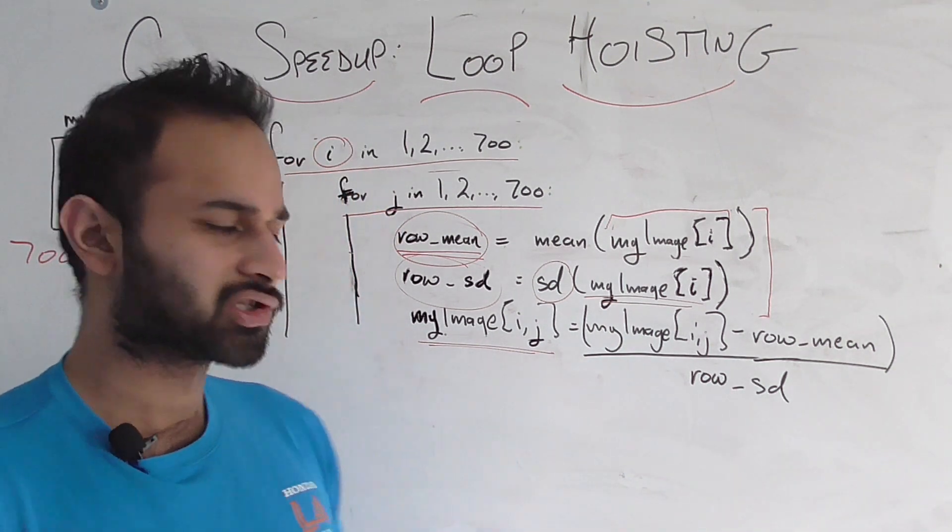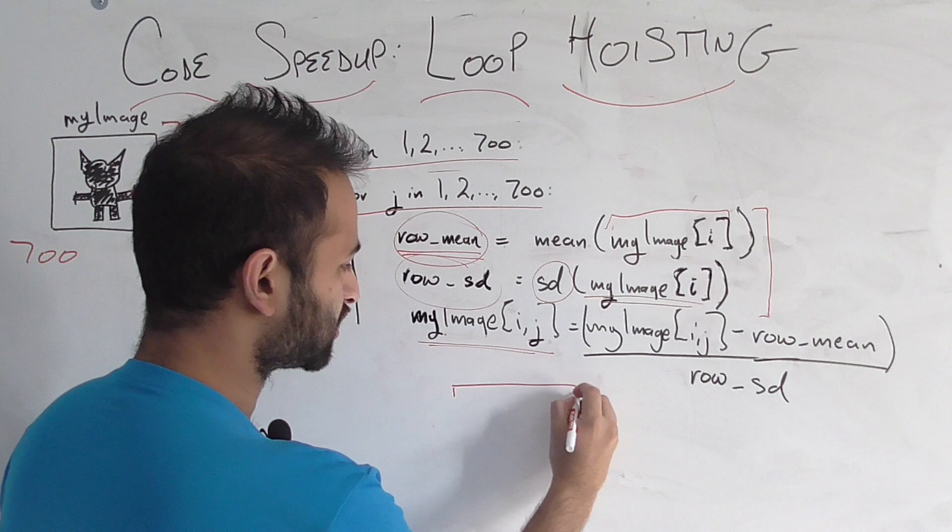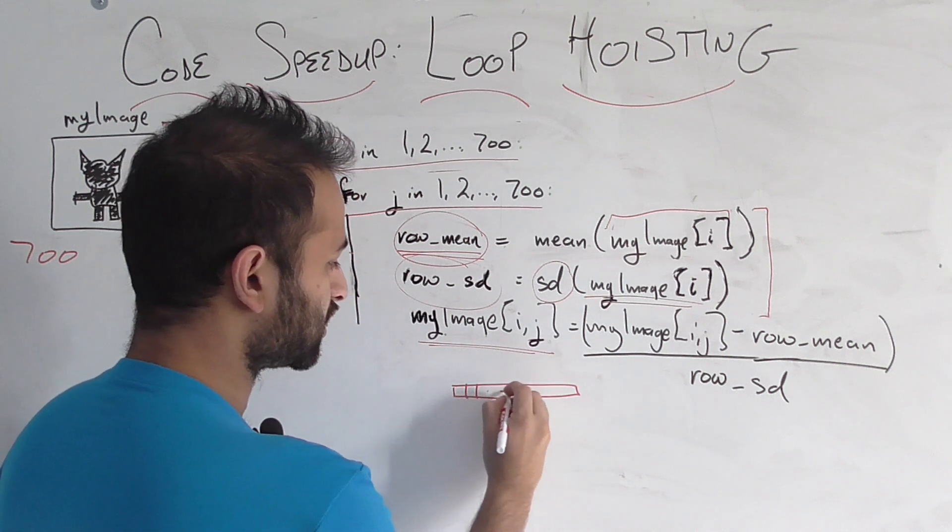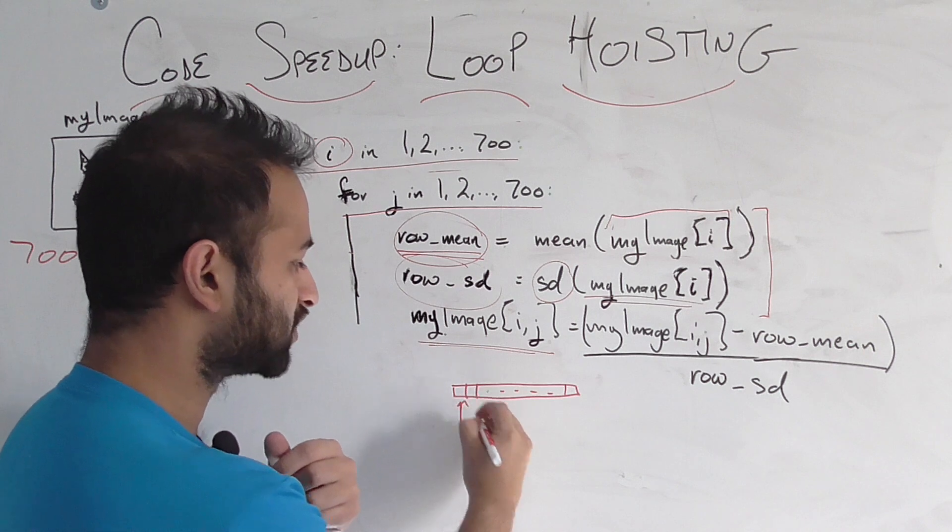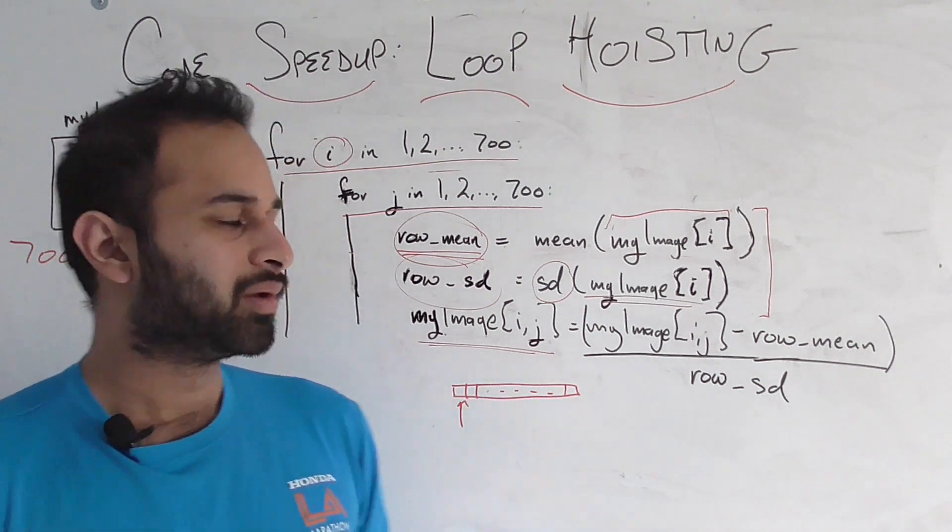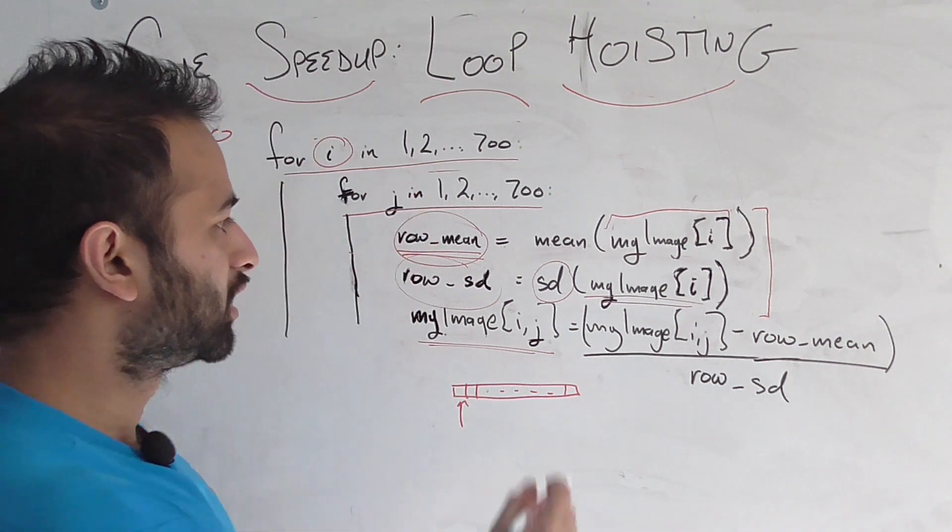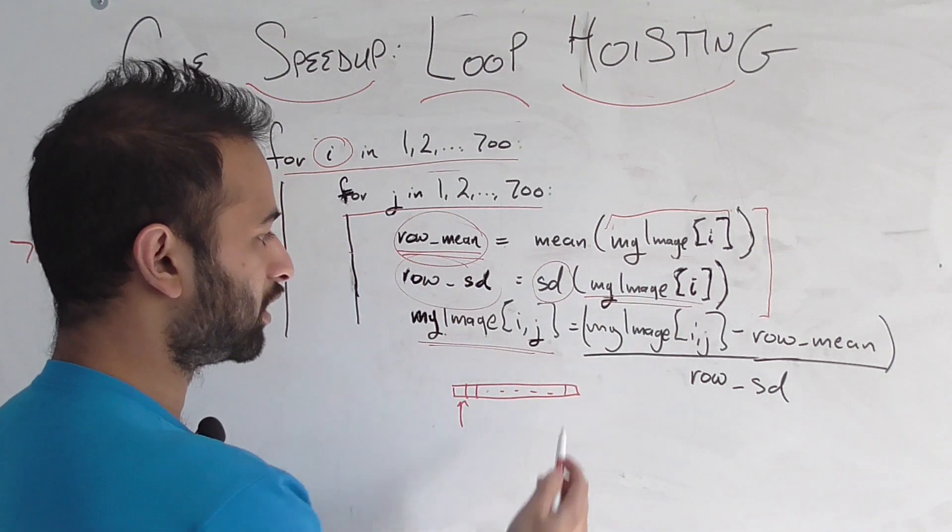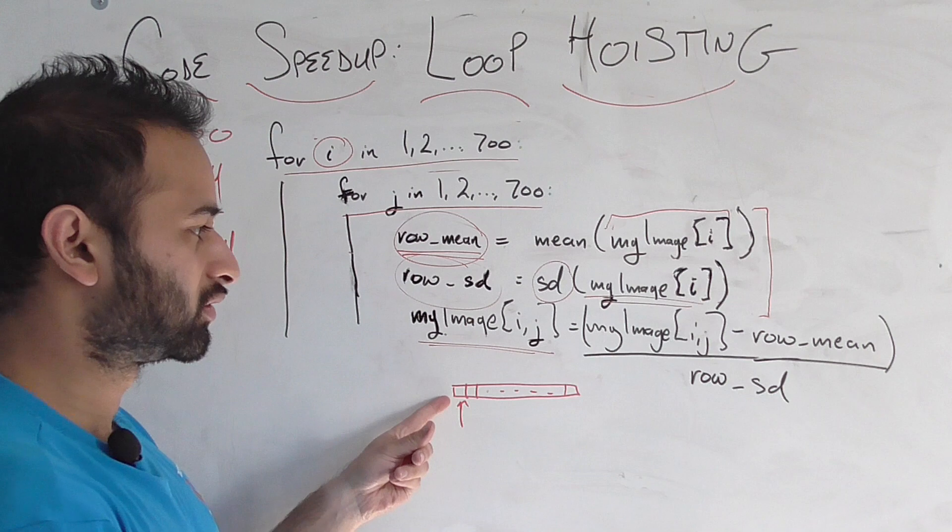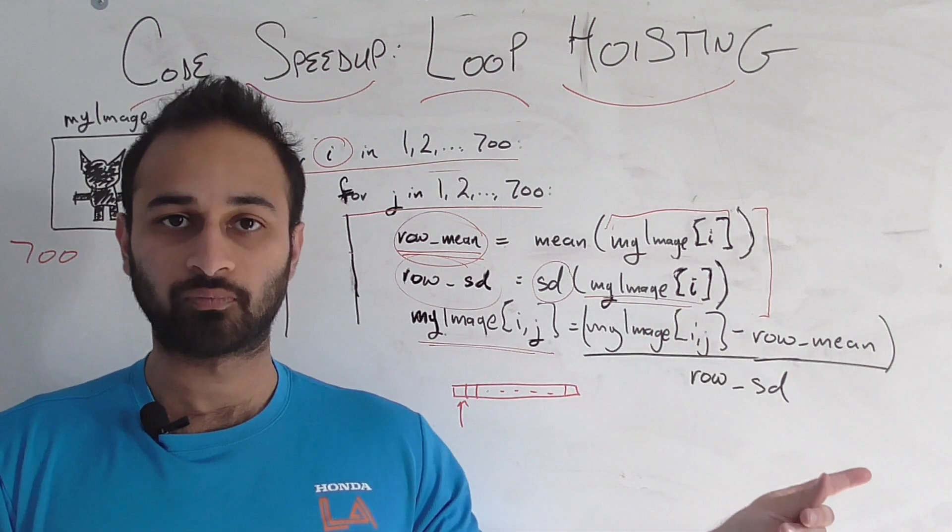To look at that, let's look at a given row. Let's say we're dealing with some row of pixels. And of course there's 700 pixels in that row. For the first pixel in that row, there's actually not a problem. Because we're going to come into these two for loops. We're going to calculate the mean of this row. We're going to calculate the standard deviation of this row. And we're going to reset the first pixel as its transformed value. No problem.